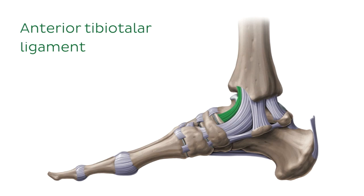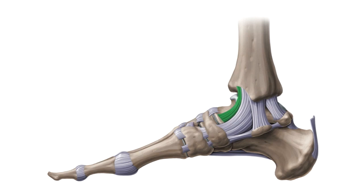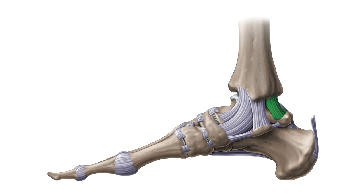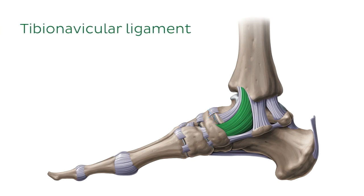It is named the anterior tibiotalar ligament — remember, ligaments are named for the bones they are attached to. On the posterior aspect of the joint, still on the medial side, we can see another ligament running from the tibia to the talus. This one is therefore called the posterior tibiotalar ligament. The next ligament, now highlighted in green, runs from the tibia to the navicular bone. Since there is only one of them, there is no need to add anterior or posterior, so it is simply called the tibionavicular ligament.